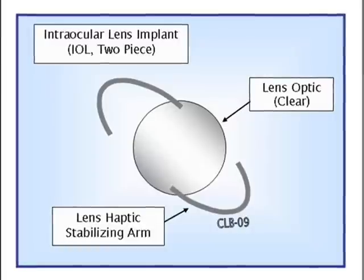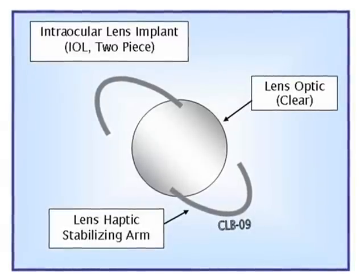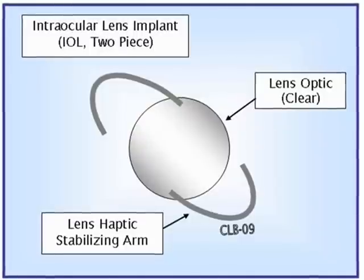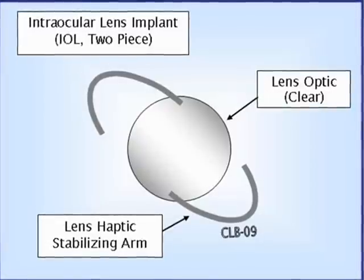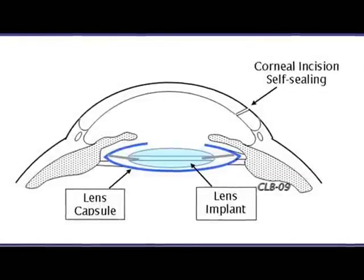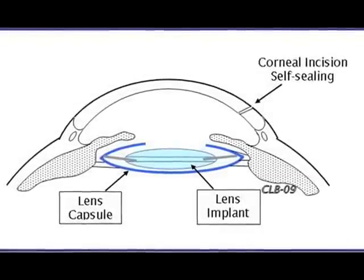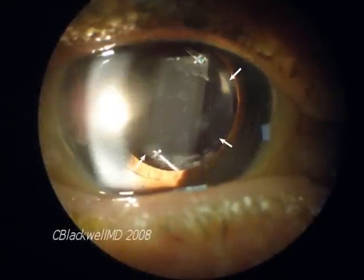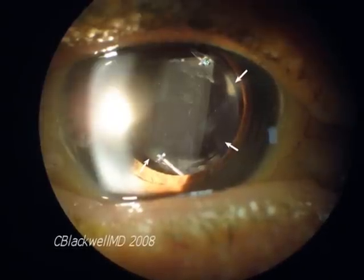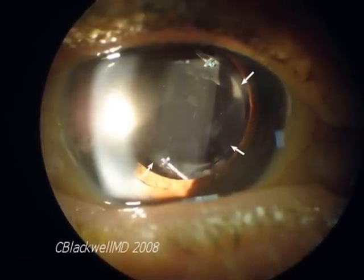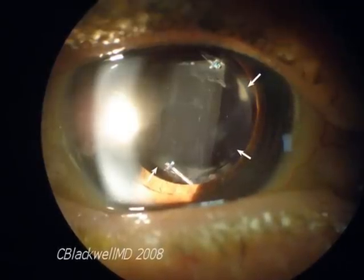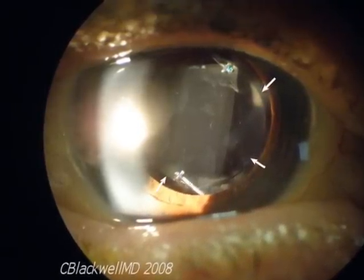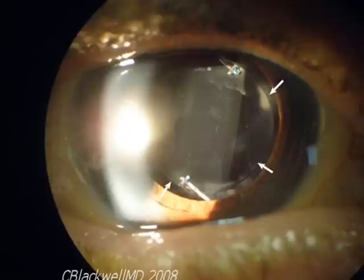Let us consider the lens implant. All implants share the same general structure: there is a central optic which replaces the focusing power of the natural lens that was removed, and two arms that hold the lens centered within the capsule. The modern lens is made of a flexible material that can be rolled up, inserted through the quarter-inch corneal incision, and once inside the eye, unfolds within the lens capsule. Here is a picture of an IOL shown in place in the capsule at the end of surgery — the arrows point to the edge of the optic part of the IOL. A big feature of the IOL is that you can choose the implant power to end up with the glasses prescription you want. This makes it a form of refractive surgery — if you started out either near or far-sighted, that can be corrected by choice of the lens implant power.